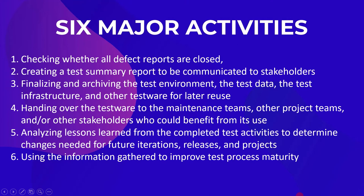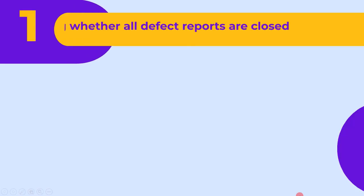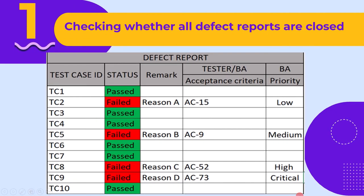Let's now understand each of these test activities one by one. The first main activity is checking whether all defect reports are closed. During test execution, we create the defect report, and in the test completion stage, we check if all the defects are closed or not. If not, we look for the reason. This is the first activity: checking whether all defect reports are closed.